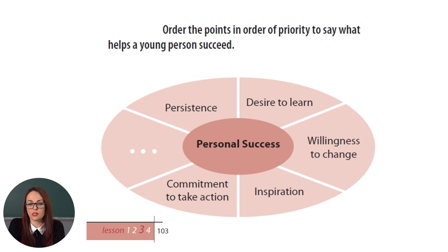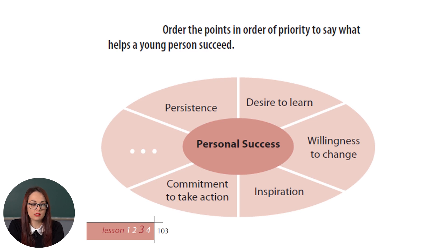Going back to the successful story that Mark Zuckerberg has shared with the world, can you order the points in this diagram according to your own priorities that would help you in becoming more successful? You have such clues as: persistence, desire to learn, willingness to change, inspiration, commitment to take action. What would you add?